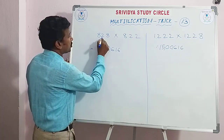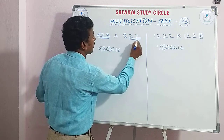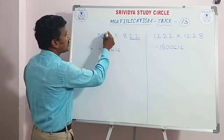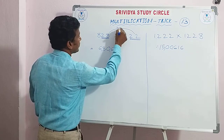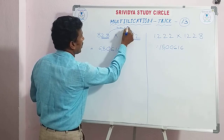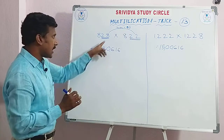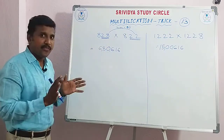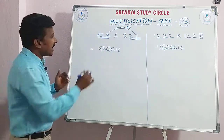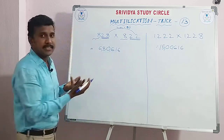My dear students, see these two numbers: 28 and 22 — their sum is equal to 50. The condition is: the sum of the units digit and tens digit from the right side must be 50. The remaining digits must be the same.